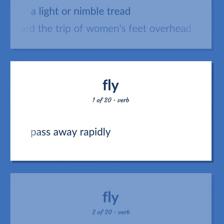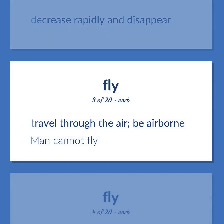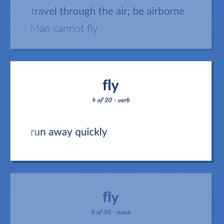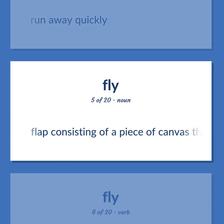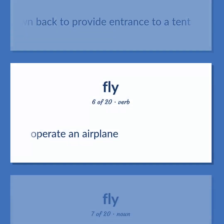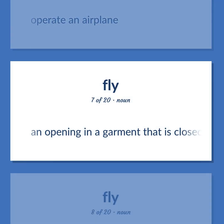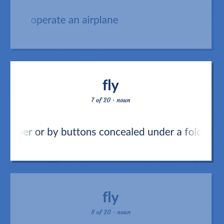Pass away rapidly. Decrease rapidly and disappear. Fly: Travel through the air; be airborne — man cannot fly. Run away quickly. Flap consisting of a piece of canvas that can be drawn back to provide entrance to a tent. Operate an airplane. An opening in a garment that is closed by a zipper or by buttons concealed under a fold of cloth.